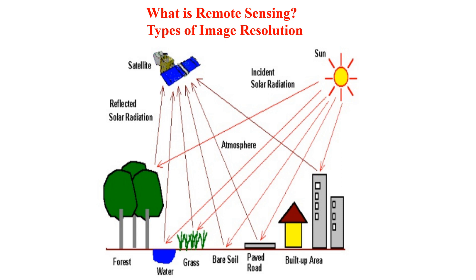There are four types of satellite image resolutions. The first one is spatial resolution — it is the area on the ground represented by each pixel. The second type is temporal resolution, which tells how often a satellite obtains imagery of a particular area. The third type is spectral resolution, which is the specific wavelength interval in the electromagnetic spectrum. The next one is radiometric resolution, which tells how the sensor captures the brightness of the object.